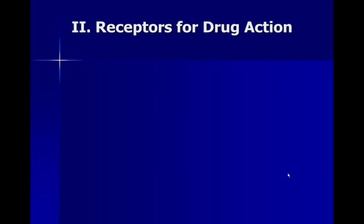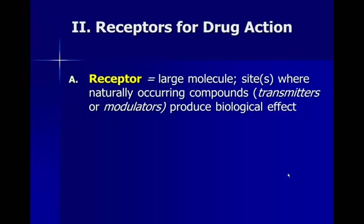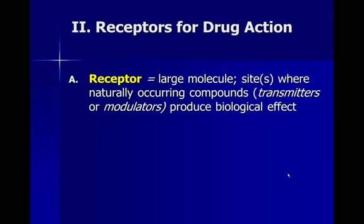The first thing we have to understand is there are what we call receptors for drug action. Throughout the body, and particularly in the brain, there are molecules on the outside of cells called receptors — it's like a lock which a key will fit into. A receptor is generally a large molecule site where naturally occurring compounds, called transmitters or modulators, can produce a biological effect. In the brain, we talked about these as neurotransmitters — you're probably familiar with some of them, like dopamine or serotonin.